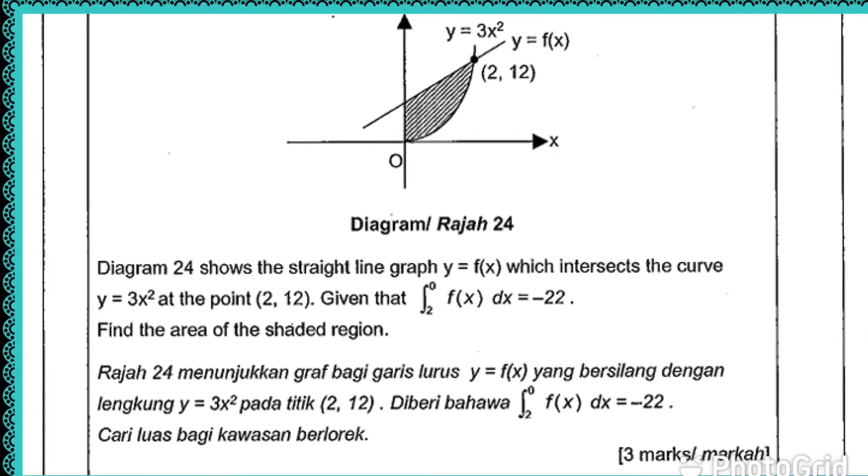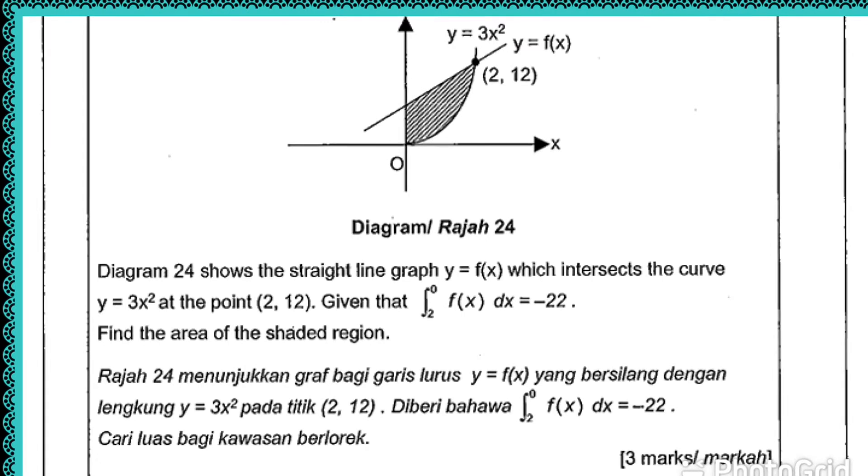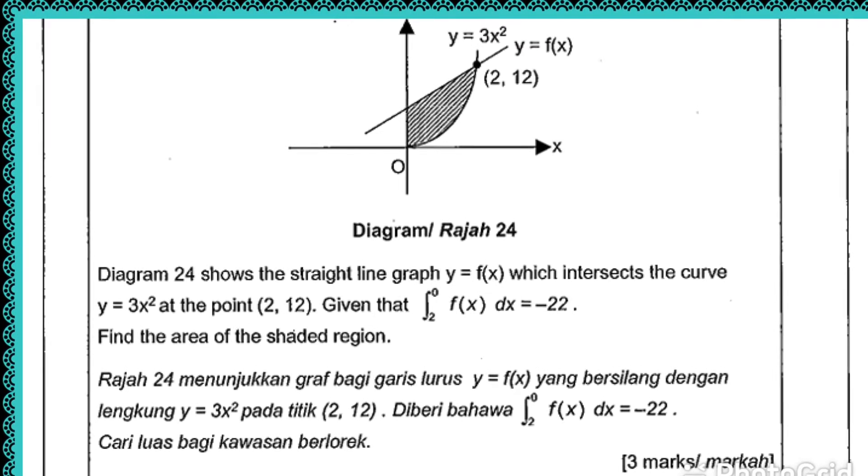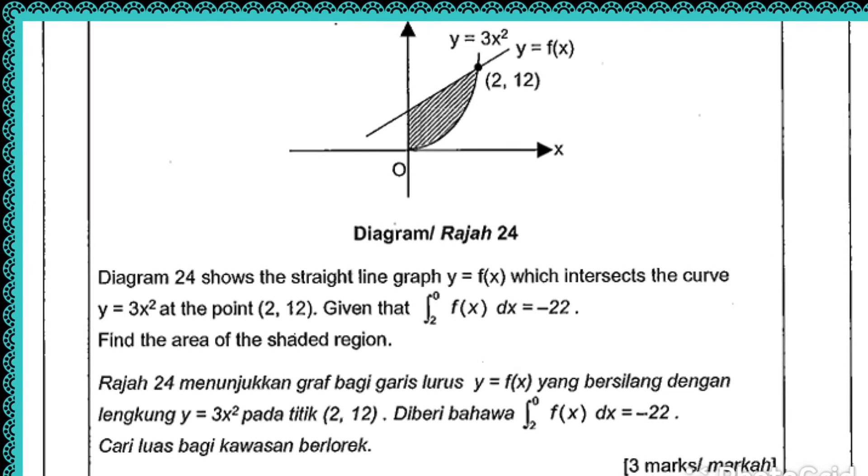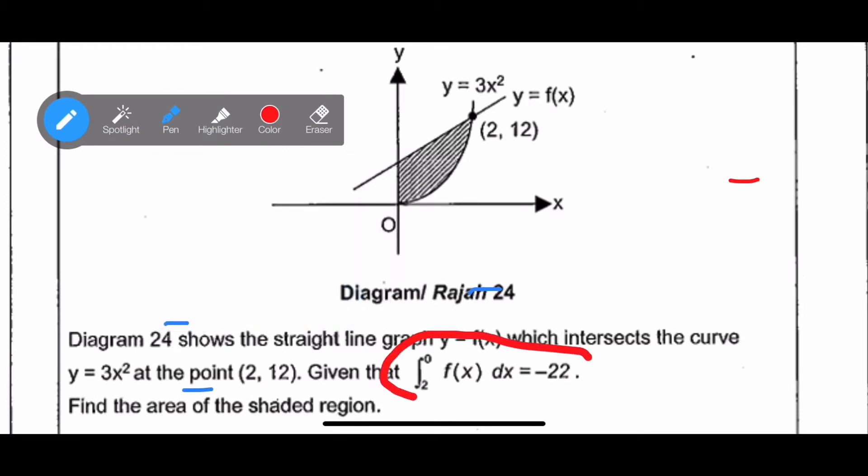Okay, let's see how to do this question. First of all, you must understand that integrate from 2 to 0, normally is from smaller to bigger, but now it's bigger to smaller. So the value is negative 22. So if I look at the question, that is the integration value. So I will reverse and then I make it positive.